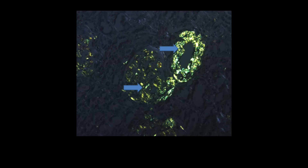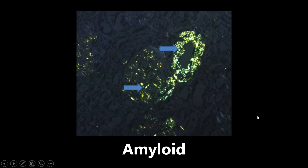Right here, a very common picture — this is going to be apple green birefringence on Congo red stain depicting amyloid. That whole phrase and this image are very, very high yield. Apple green birefringence on a Congo red stain — if you hear that or if you see this image, you want to be thinking about amyloid and amyloidosis immediately.